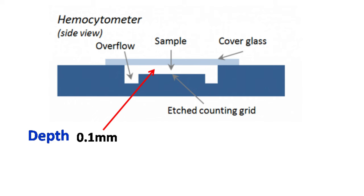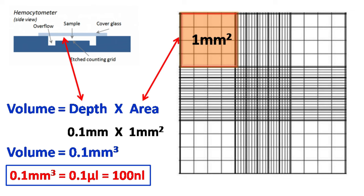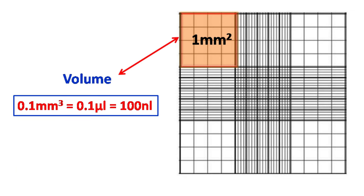And the depth of the chamber is around 0.1 millimeter. Now if we multiply area by depth, then what we get is the volume. And here we come to the magical number of 100. The volume occupied by each of the large squares is around 100 nanoliters. And that's the only thing you need to remember: 100 nanoliters.